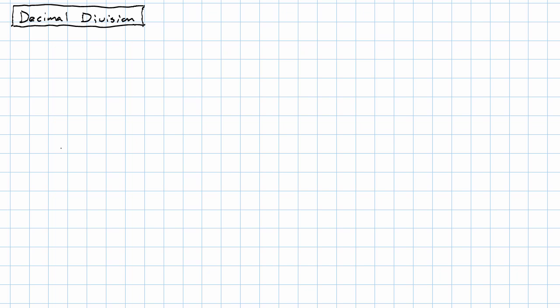What do we want to get out of decimal division? When we divide decimals, we would like to get a decimal for our answer, and we'd like to undo decimal multiplication. So let me put up a simple example of decimal multiplication.